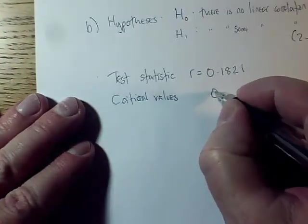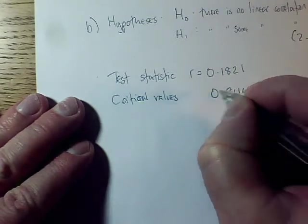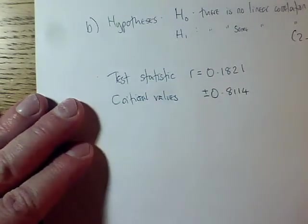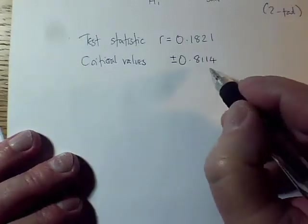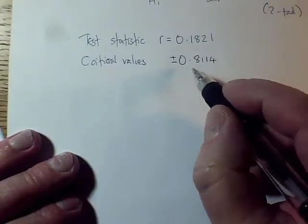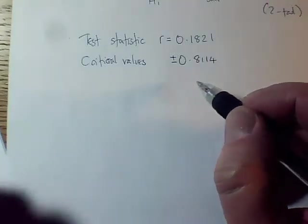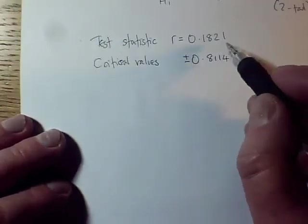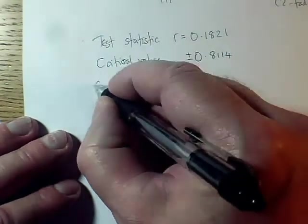So the figure I need is this 0.8114, and because it's a two-tailed test, it's actually plus or minus that. I'd be impressed by either values above plus 0.8114 or values below negative 0.8114. Now the value I've got for my test statistic, I'm now doing the comparison.